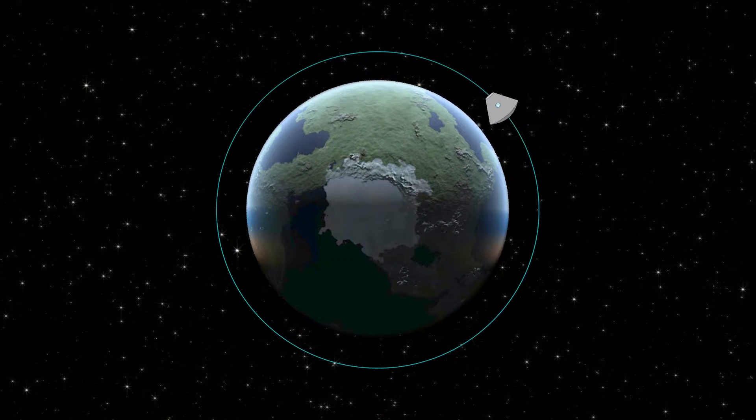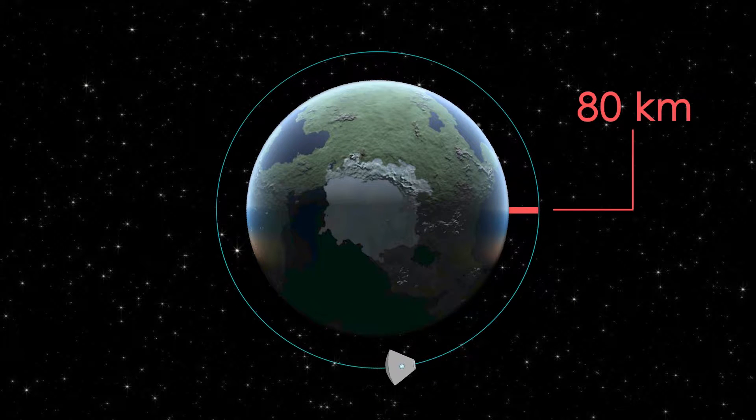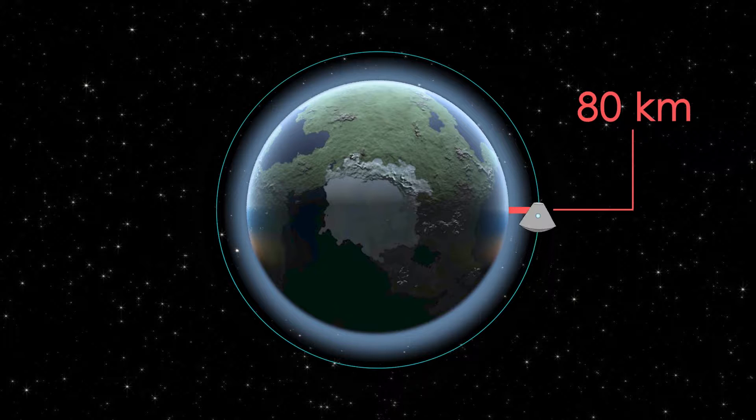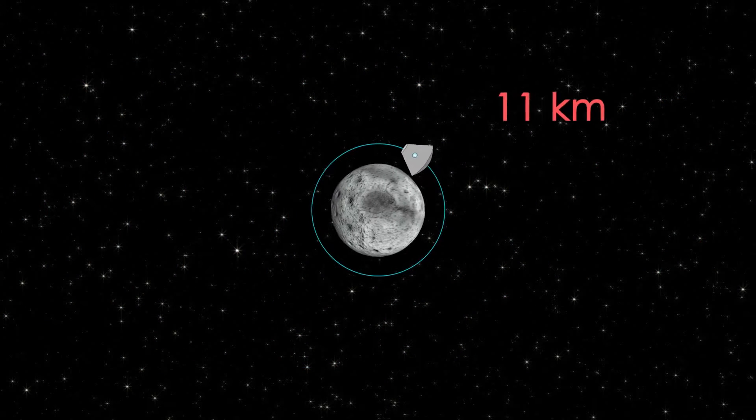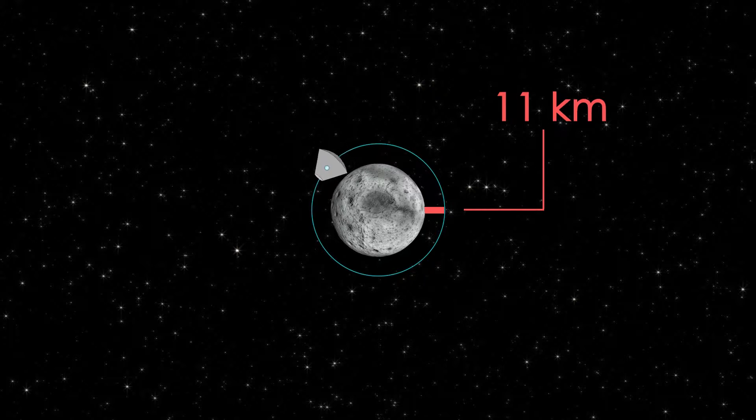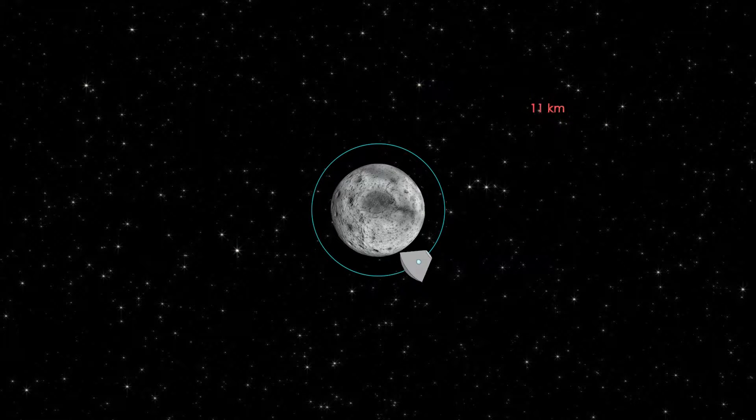Our initial orbit will be circular with an altitude of 80 kilometers. This is a pretty standard altitude because it's close to the atmosphere, which ends at about 70 kilometers, but it has some extra room to maneuver. The final orbit around the Mun will be 11 kilometers, because getting any closer would mean we can't speed up time by more than 10 times, which is just annoying.